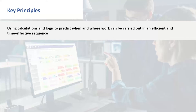The scheduling system is essentially a number cruncher — it uses calculations. It can do things very quickly, much more quickly than you can do things manually. What it provides is the ability to predict when and where you can carry work out, based on the capacity you have, in an efficient and time-effective sequence. It can never produce any better schedule than you're able to do manually with all your experience, but it can keep that up to date and show the impact of changes very quickly — which is impossible to do with any other system.